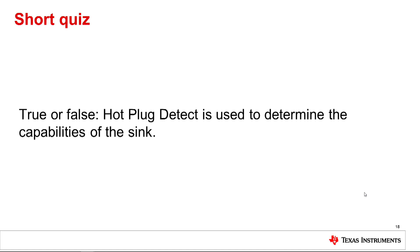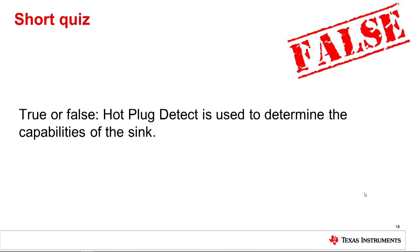Number 3: True or false — hot plug detect is used to determine the capabilities of the sync. The answer is false. HPD is used to signal that the sync is ready for the source to read its EDID. The DDC is then used by the source to determine the capabilities and characteristics of the sync by reading the EDID.